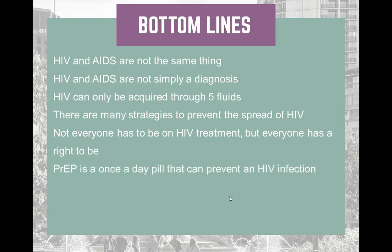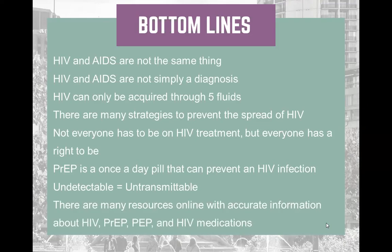PrEP is a once-a-day pill that can prevent HIV for folks who are HIV negative — and this is a very important tool in our toolbox for eliminating new HIV infections. Being undetectable, or having an undetectable viral load, means that folks cannot transmit HIV through sexual contact. There are many resources online with accurate information about HIV, PrEP, and medications, some of which I just listed, and I encourage all of you to visit those resources.